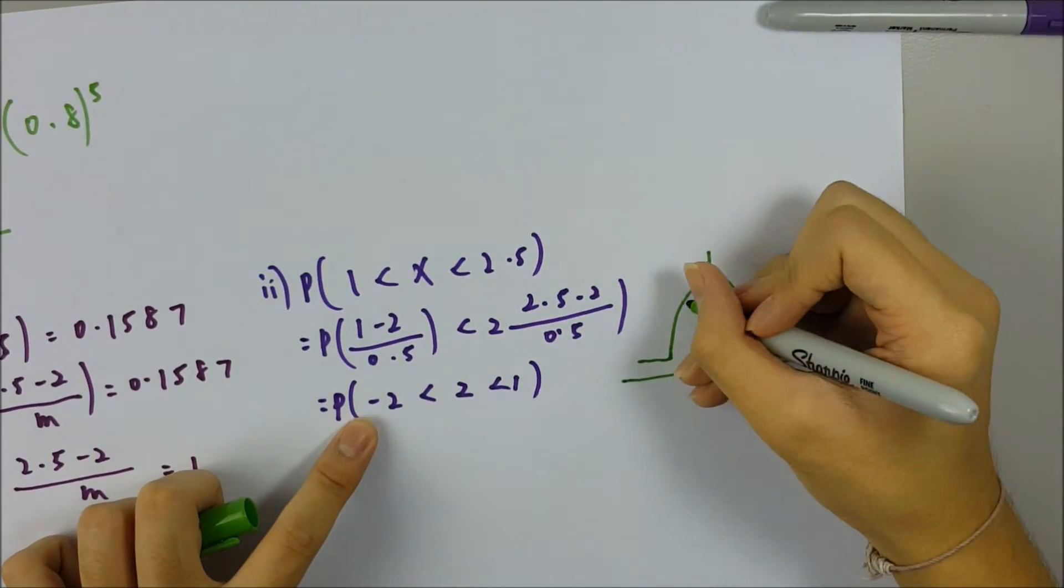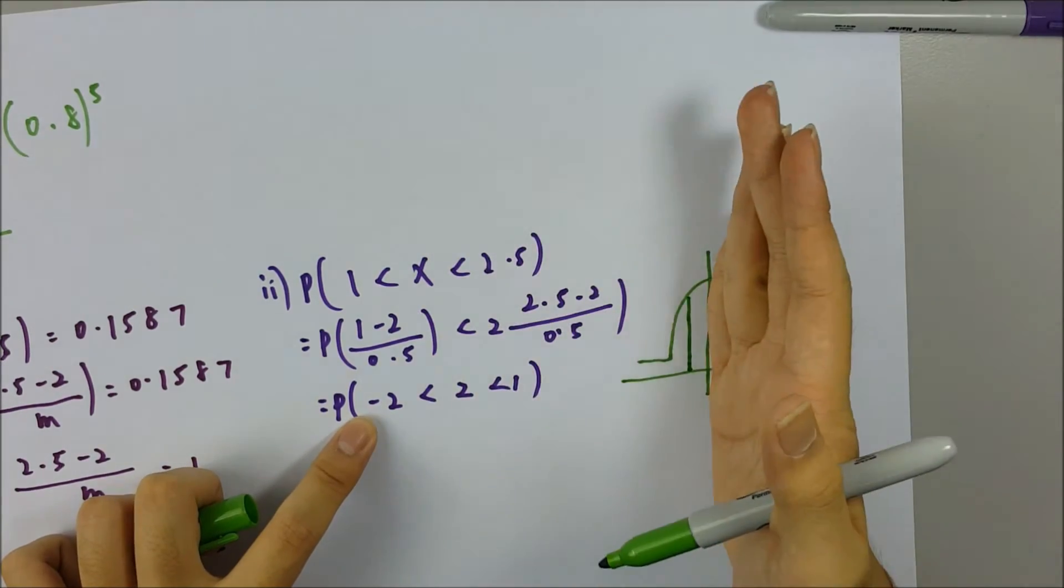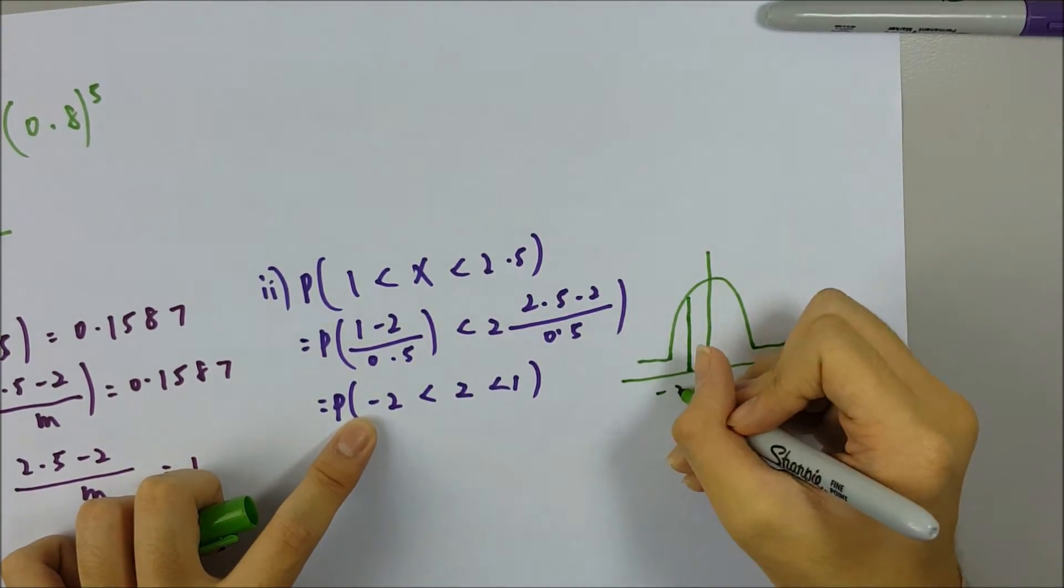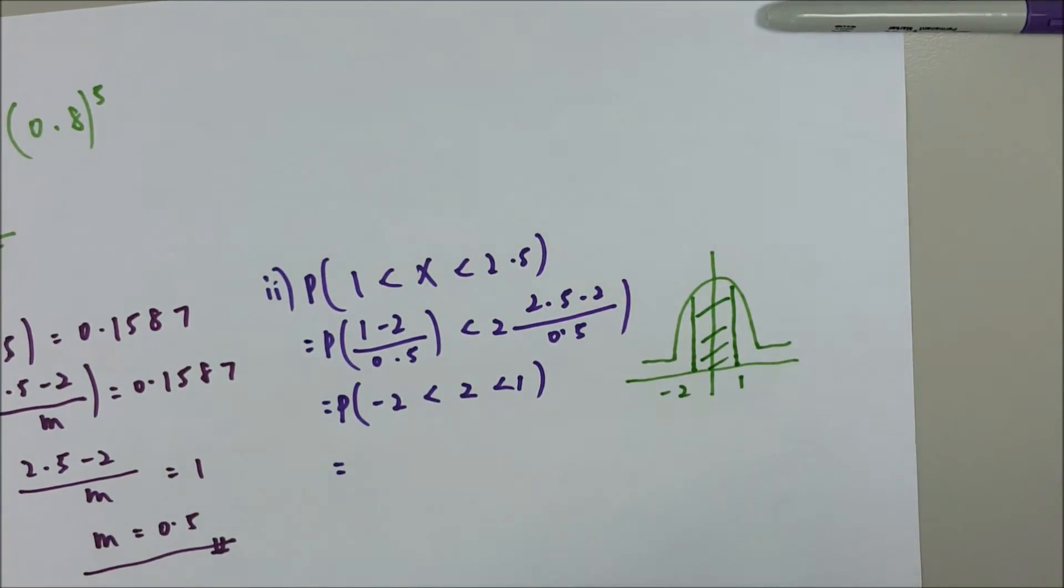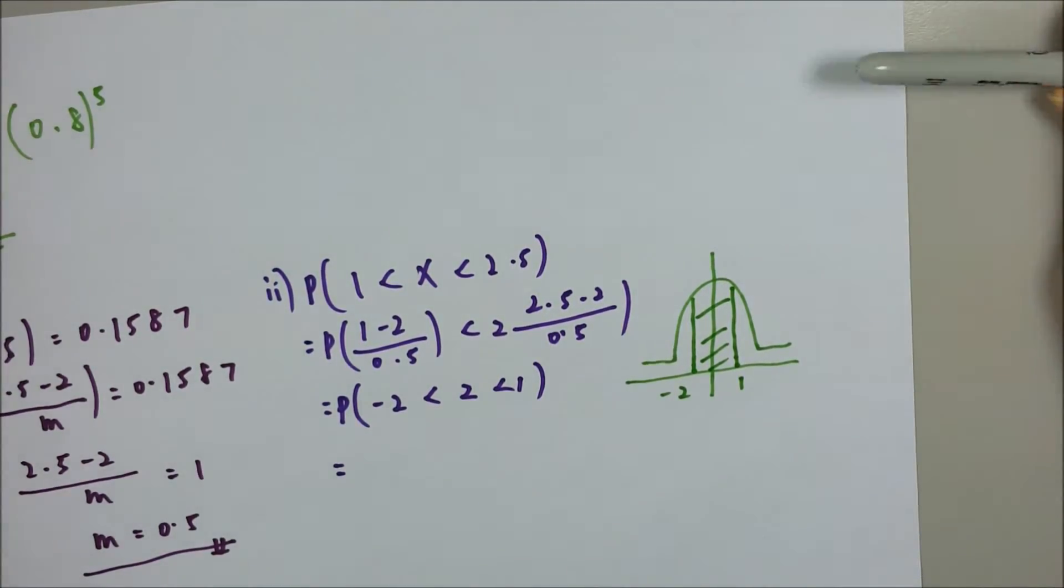So negative 2 is here on this side (negative side), and here is 1 on the positive side. So here is the area that you want to find, and the area is equal to the probability.